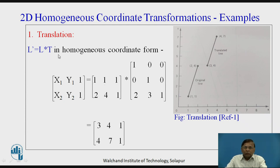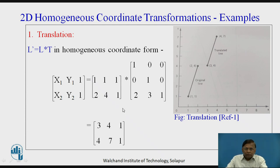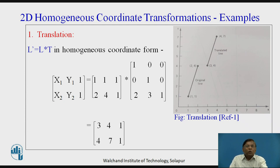This is the actual representation in the homogeneous coordinate transformation system. The result comes out as 3, 4, 1 and 4, 7, 1, wherein dropping the augmented third column we get (3, 4) and (4, 7) as the new coordinates. So x1, y1 is (3, 4) and x2, y2 is (4, 7), indicating the new positions of the two points. This is the translated line using homogeneous coordinate transformation.